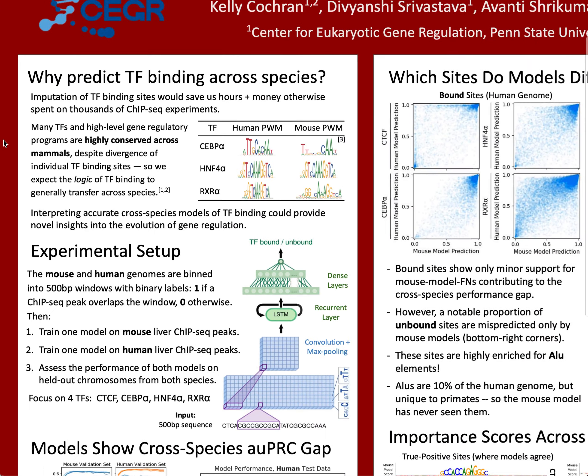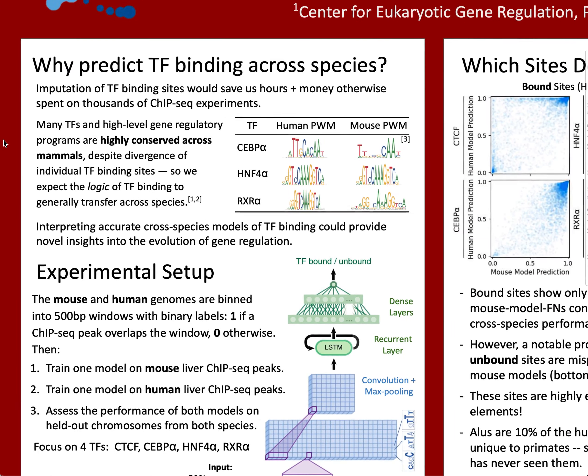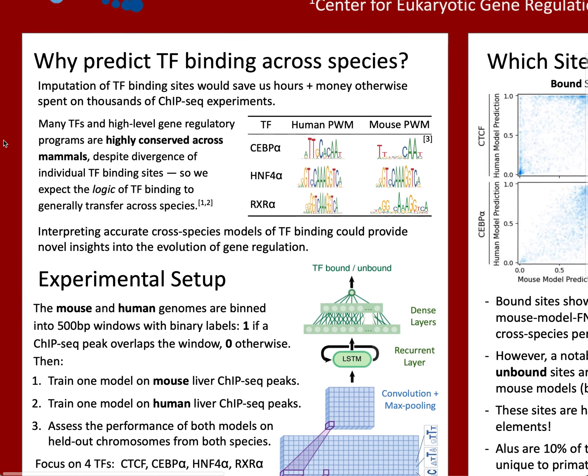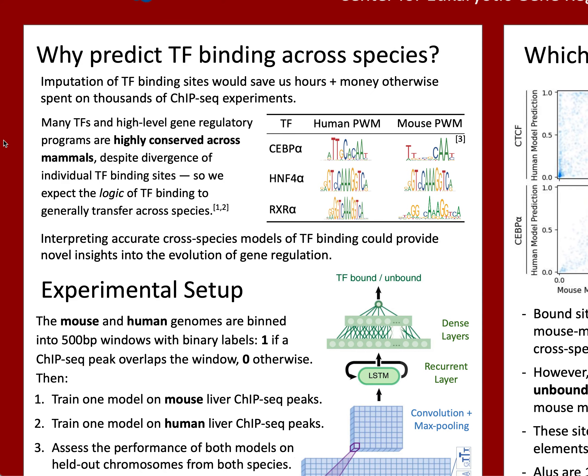You can imagine a lot of motivations for wanting to do this. For example, we could impute TF binding data in many cell types in species where it might be too difficult or too costly to perform the ChIP-seq experiments directly. We could also use these models as an oracle to better understand how gene regulation has evolved differently in different related species. And because of how highly conserved the regulatory programs and sequence affinities of many TFs are across mammals, this is something that should be feasible.